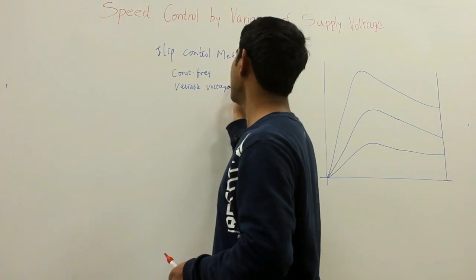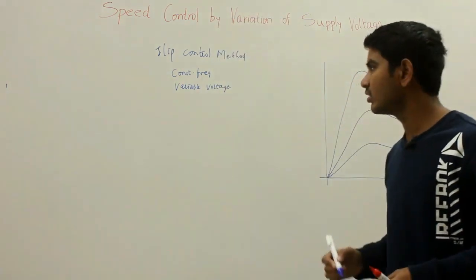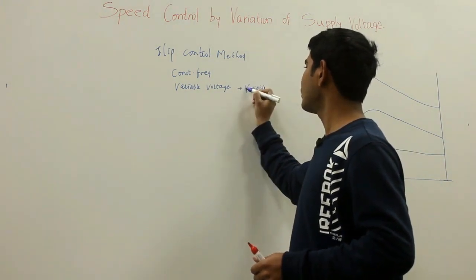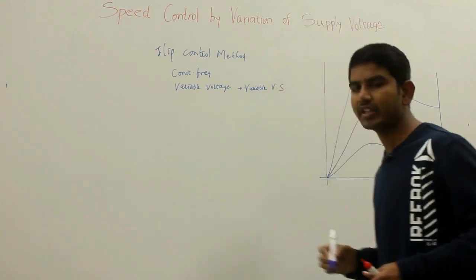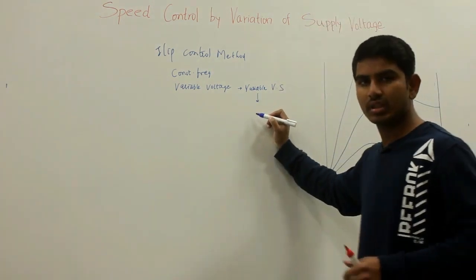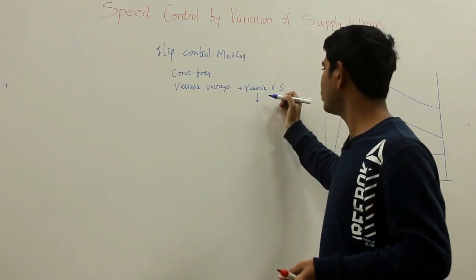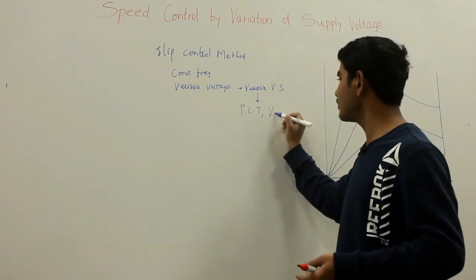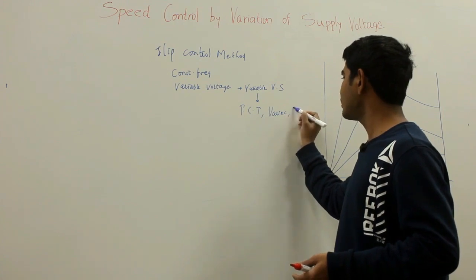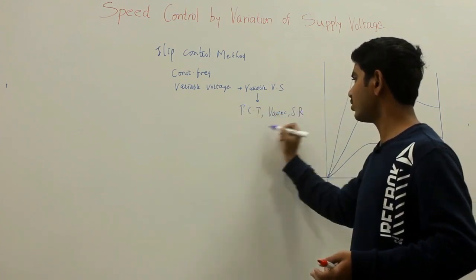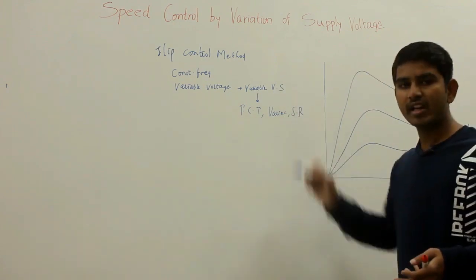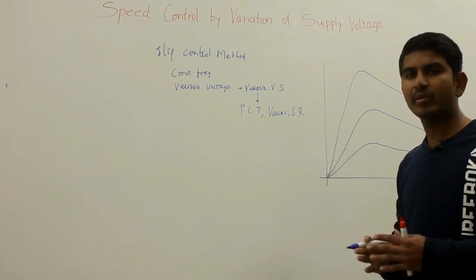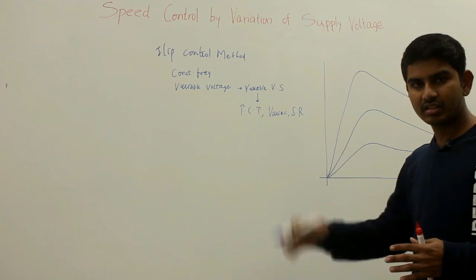By varying the supply voltage, you can vary the speed. We need a variable voltage source for using this method of speed control. This variable voltage source can be obtained from tap changing transformers, variable transformers, or saturable reactors. By using this auxiliary equipment, you can get the variable supply voltage. In general, this method of speed control has various limitations.